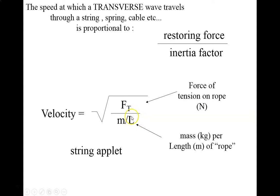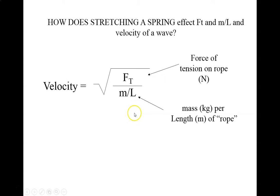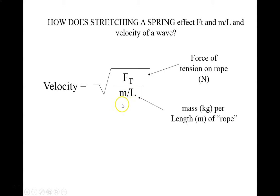The greater the tension in that rope, the greater the velocity, and the lighter that spring, the greater the velocity. How does stretching a spring affect these things? Stretching increases the tension because the spring pulls back harder the further you stretch it. The mass per unit length decreases because that same amount of mass gets stretched into a longer length. So stretching a spring increases the velocity for two reasons: it increases the tension and decreases the mass per unit length.